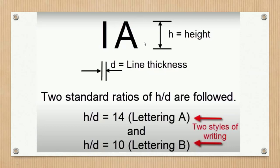There is the height and the line thickness. The two standard ratios of H by D are followed: H by D equals 14 for Lettering A, and H by D equals 10 for Lettering B. Lettering A and Lettering B are the two styles of writing.